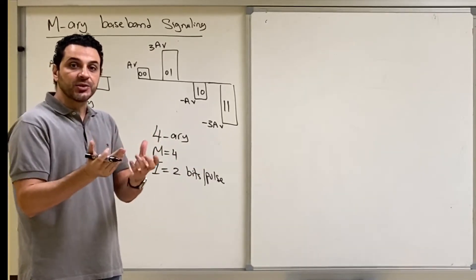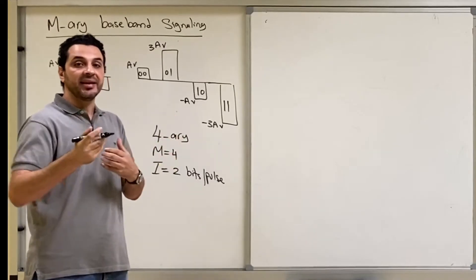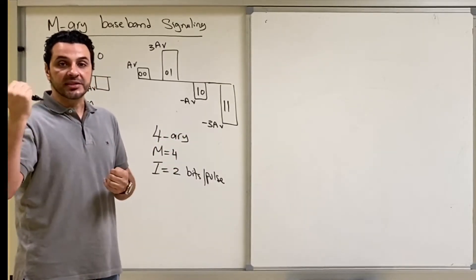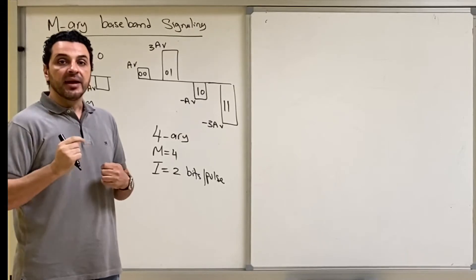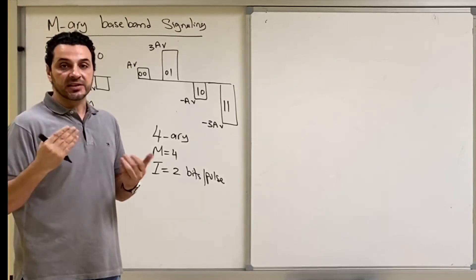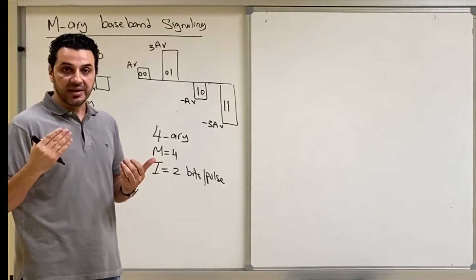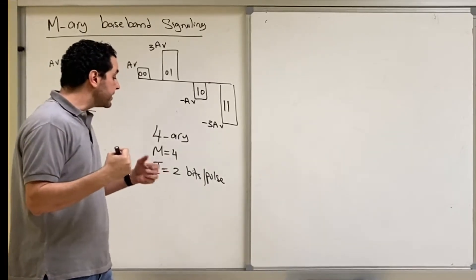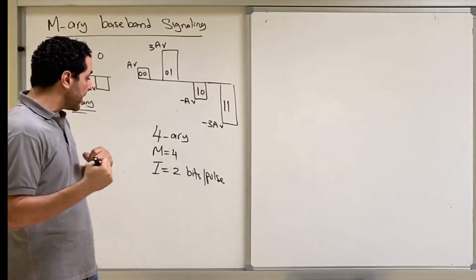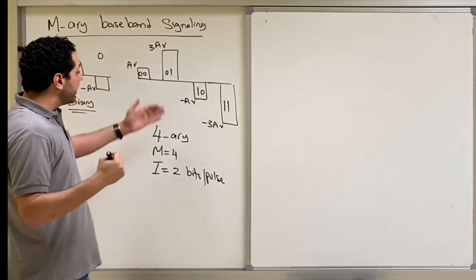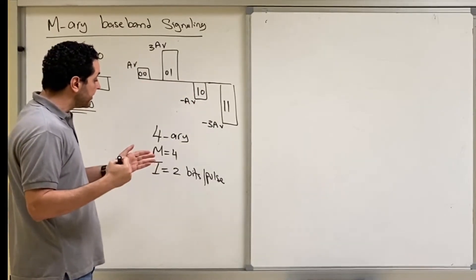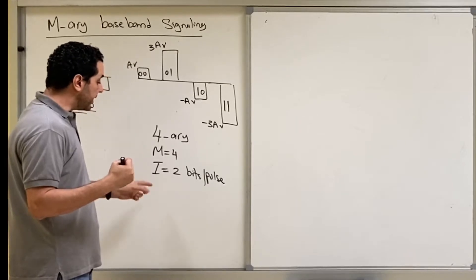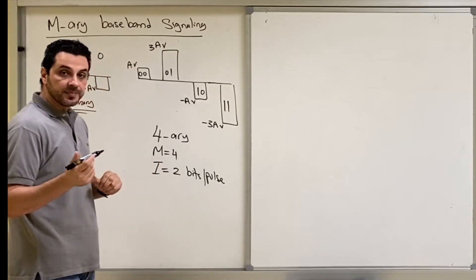You should be careful not to confuse I with N. N is the number of bits per sample that we studied before in sampling, and N depends on the number of quantization levels L. But here, I is the number of bits per pulse. So in the case of 4-ary, M equals 4 and I equals 2 bits per pulse.